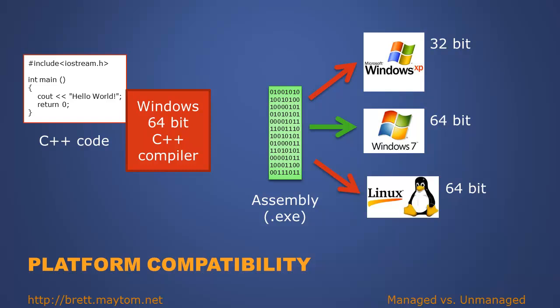Let's say we take that same code and compile it using a Windows 64-bit compiler. It will successfully run on Windows 7 64-bit. However, it will not run on Windows 32-bit. The reason being is the 32-bit processor is unable to run 64-bit applications.